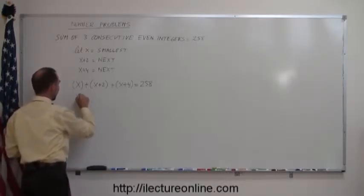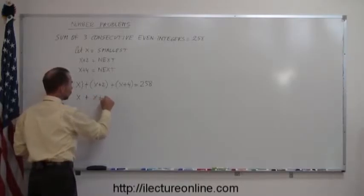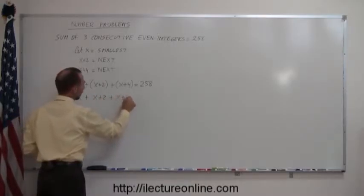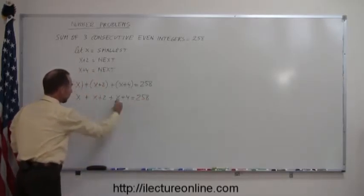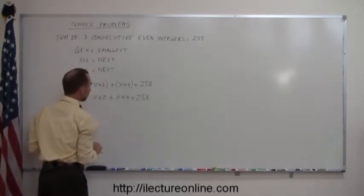Getting rid of the parentheses I get x plus x plus 2 plus x plus 4 equals 258. And then of course I use my algebraic techniques. That means I move all my x to the left side, all the numbers to the other side.